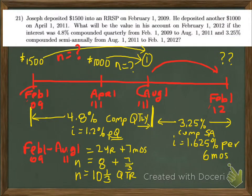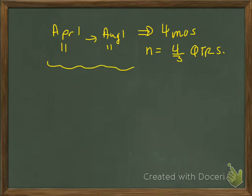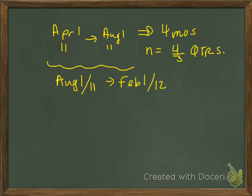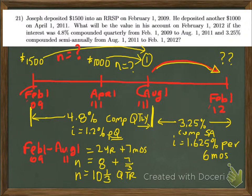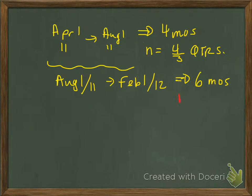Now we determine how many interest periods fall in the final segment where the rate changes to 3.25%. From August 1, 2011 to February 1, 2012, we have exactly six months. Since interest is compounded semi-annually during that period, six months equals exactly one semiannual period. Now we have all the periods we need and are ready to calculate.